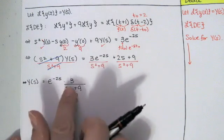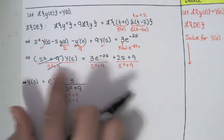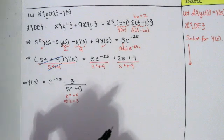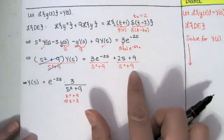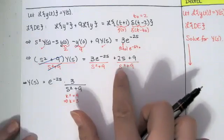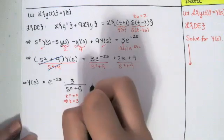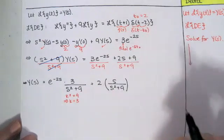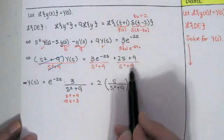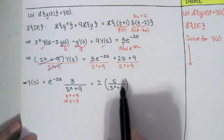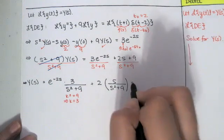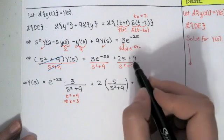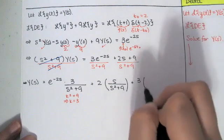This term e^{-as}·F(s) can be handled using the second translation theorem. For the remaining terms, we have 2s/(s²+9) and nine/(s²+9). The 2s/(s²+9) can be written as 2·[s/(s²+9)], which leads to a cosine. For nine/(s²+9), since k²=9 means k=3, I need a three in the numerator, so I factor out three to get 3·[3/(s²+9)].